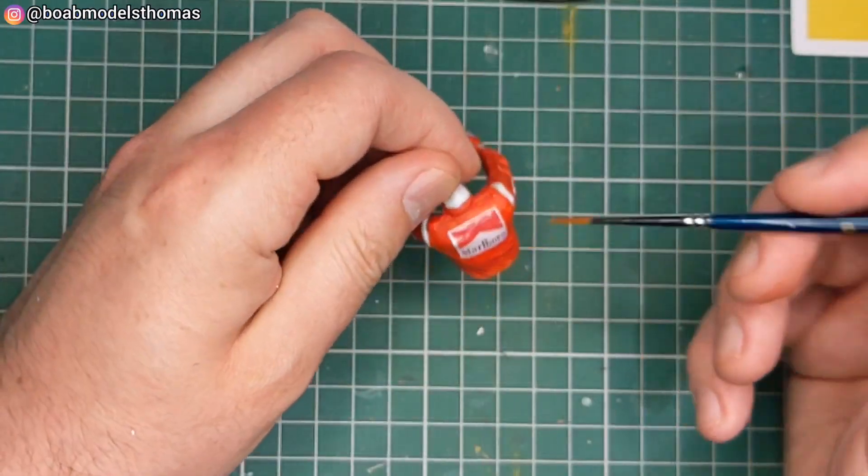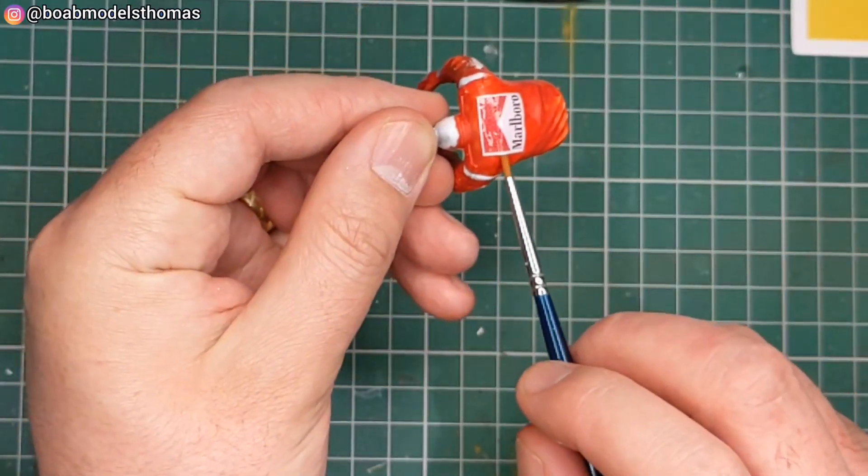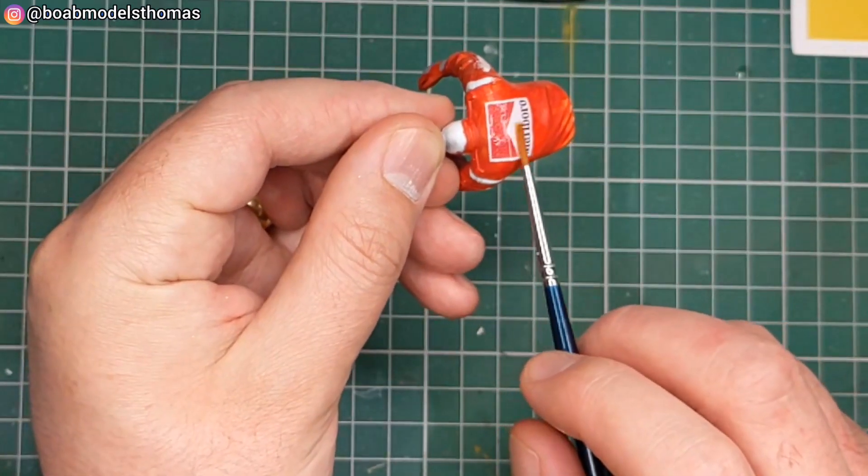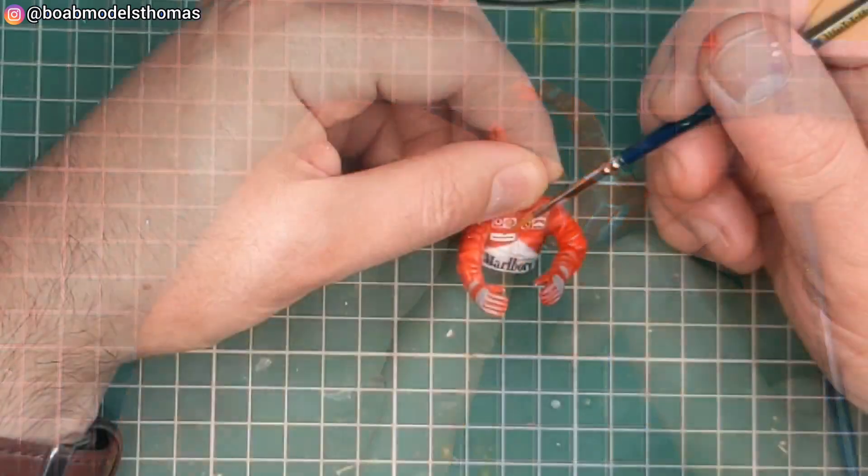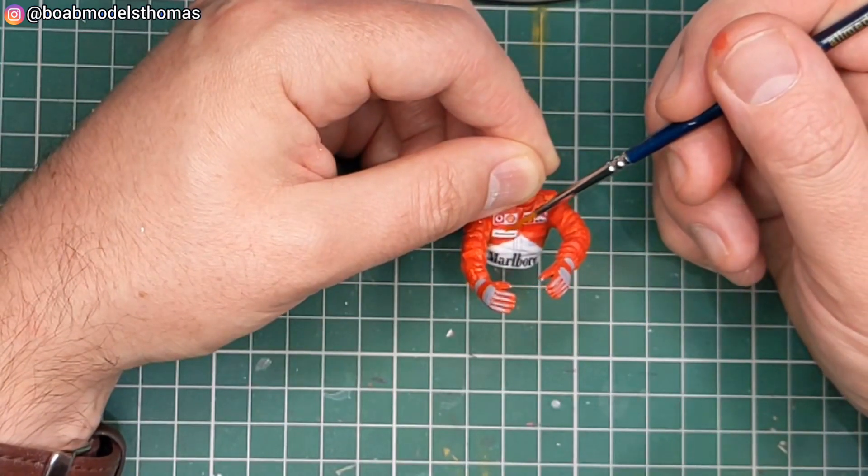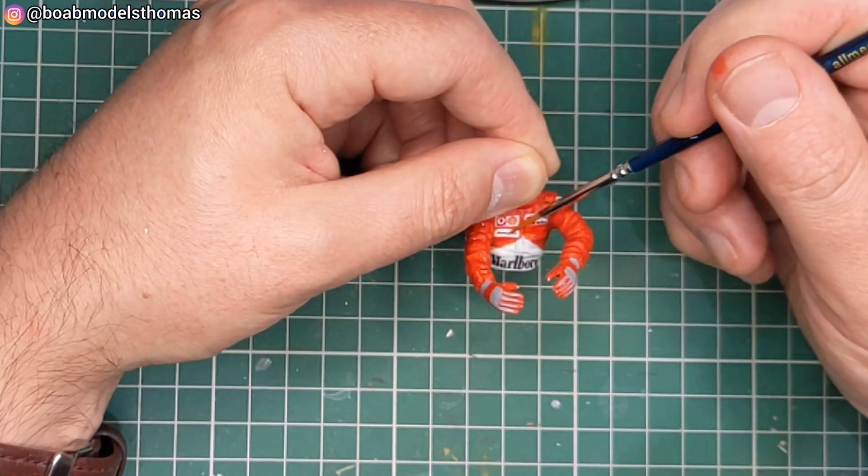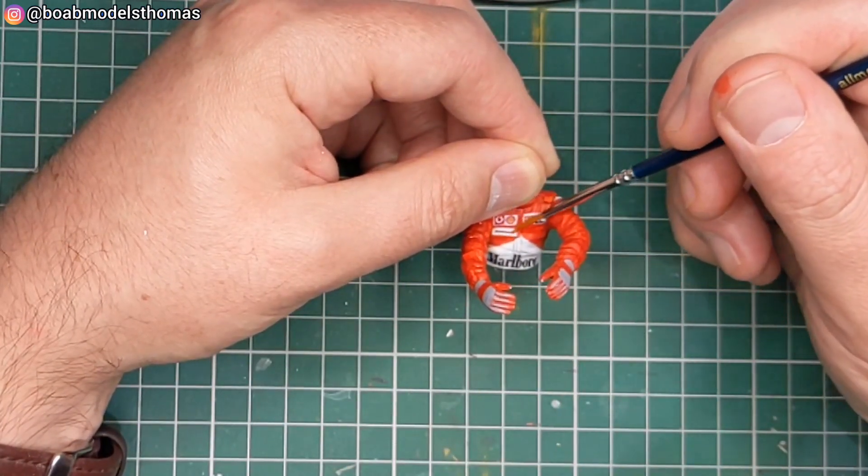I did a larger Marlboro decal for the back. These decals were all printed on white backed decal paper. And then I used some of the kit decals as well including this Bridgestone one which went here on the chest.